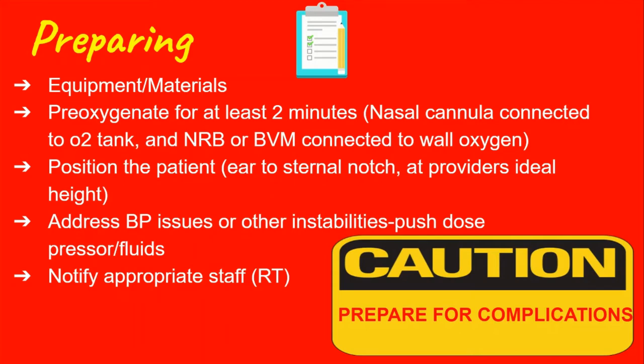A side topic is that an ambu bag can be used instead of the non-rebreather. But if the patient is taking their own spontaneous breaths, you simply hold the ambu bag mask over their mouth and nose without bagging or squeezing air into them. However, if the patient is not taking their own spontaneous breaths, then you do a 3C-type seal and bag them every 5 seconds. You ideally want to pre-oxygenate a patient for at least 2 minutes.